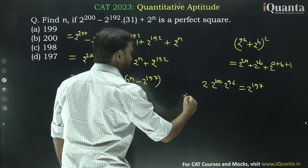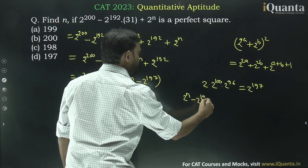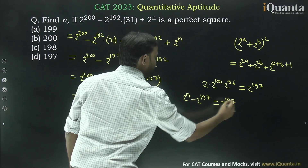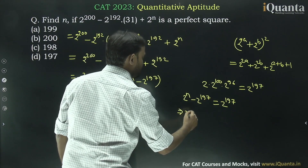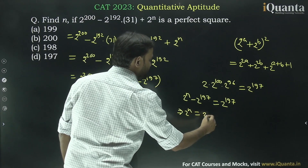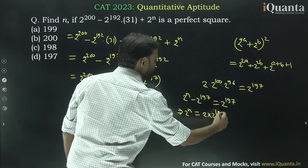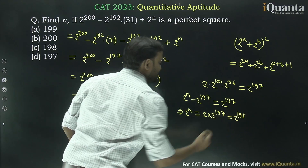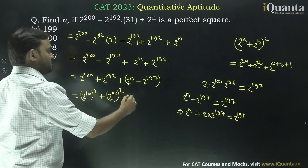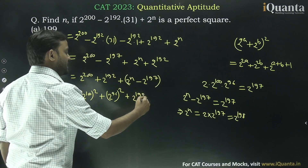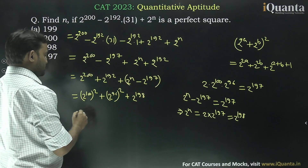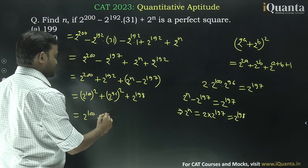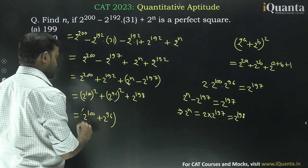So we can equate: 2 to the power n minus 2 to the power 197 should be equal to 2 to the power 197. So 2 to the power n is equal to 2 into 2 to the power 197, which is equal to 2 to the power 198. So if I put 2 to the power 198 here, this will become (2 to the power 100 plus 2 to the power 96) whole square.